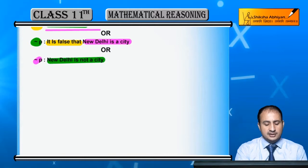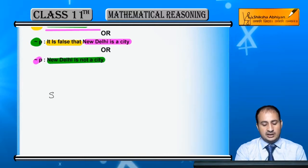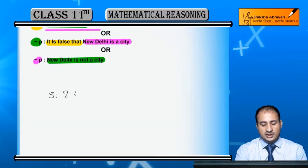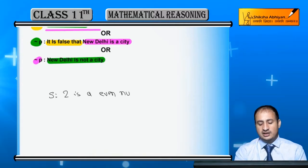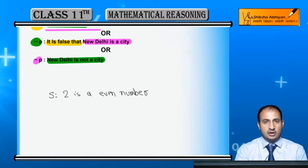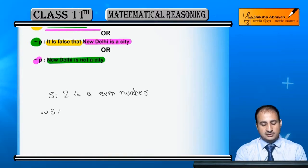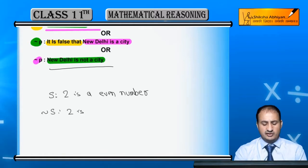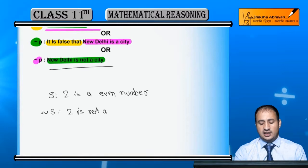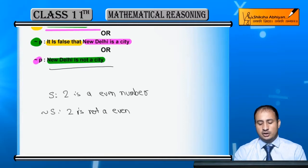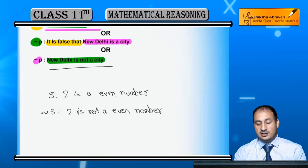Ab ek aur example lete hain. Statement S: '2 is an even number' - 2 ek even number hai. Ab iska negation kya hoga? Negation of S - aap kisi bhi upar wale tarike se likh sakte hain - negation ho jayega: '2 is not an even number.' 2 ek even number nahi hai.